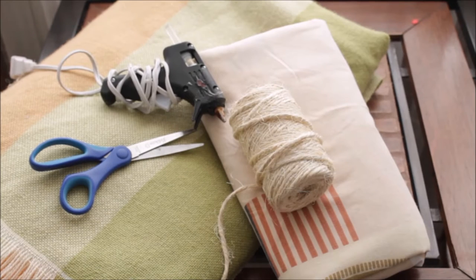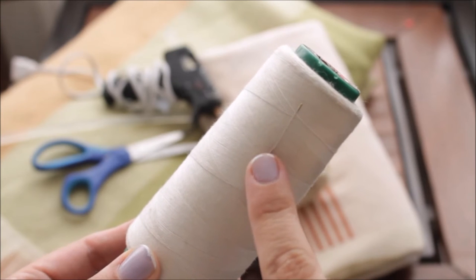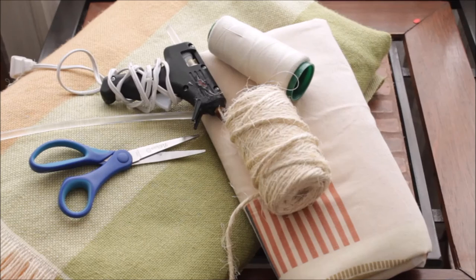Voy a utilizar tijeras, silicón caliente, hilo y aguja porque vamos a coser un par de cositas. Esto que les estoy mostrando aquí es un protector de cuna que Emiliano ya no va a volver a utilizar porque es muy pequeño. Lo que voy a hacer será cortarlo en partes iguales y luego unirlo por los bordes para crear como una especie de colchoneta.